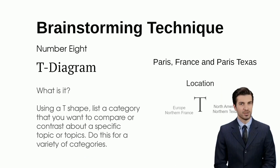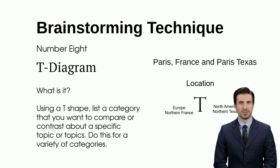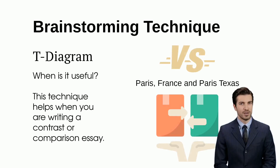To compare or contrast various categories about a specific topic using a T-shaped diagram, list the categories or aspects you want to compare or contrast in the left column of the T, and provide details, examples, or characteristics for each category in the right column. A tree diagram is also a useful tool for crafting an essay that highlights contrasts or comparisons.